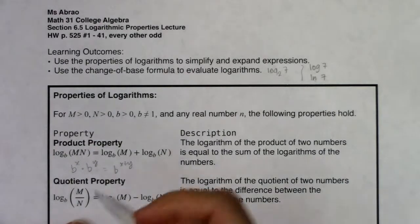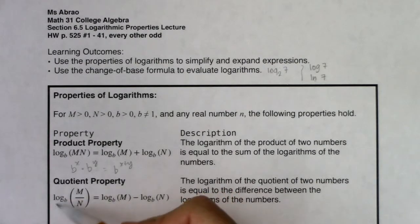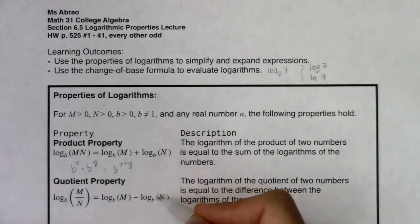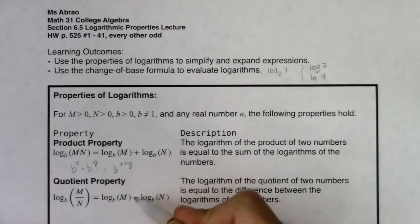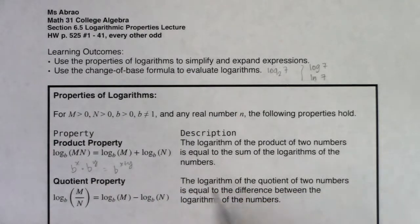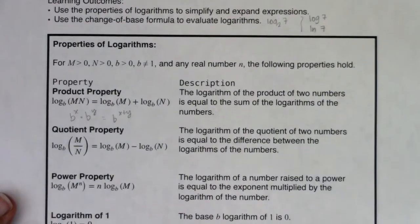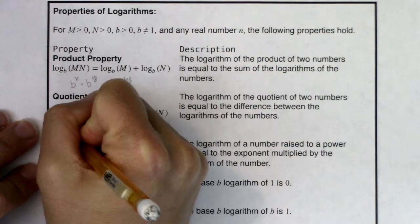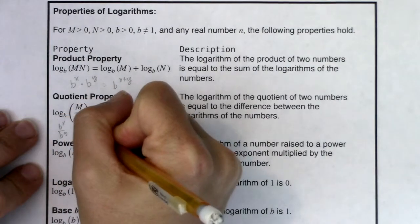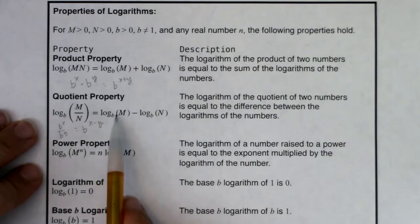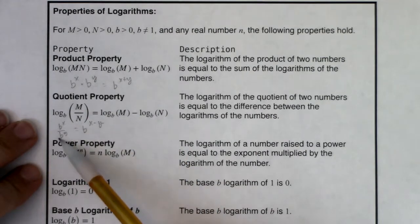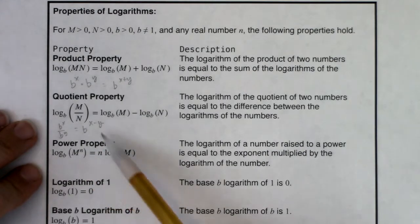We also have the quotient property. On the left side you have one logarithm with a semi-complicated argument, and on the right side two logarithms with simple arguments, just m and n. When you have a quotient as your argument, the quotient property says you do log base b of m minus log base b of n. The logarithm of a quotient of two numbers equals the difference between the logarithms. This stems from the exponential property: when two powers with the same base are divided, you subtract the exponents — and logarithms are exponents.